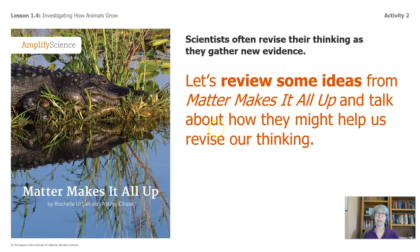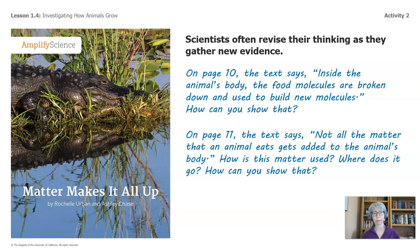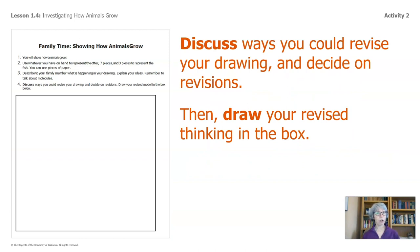Scientists often revise their thinking as they gather new evidence. Let's review some ideas from the book again and talk about how they might help us revise our thinking. Think about the household items you picked out to represent the otter and the fish. On page 10, the text says: not all the matter that an animal eats gets added to the animal's body. How is this matter used? Where does it go? How can you show that? Discuss the ways you could revise your drawing, decide on revisions, and then draw your revised thinking in the box.